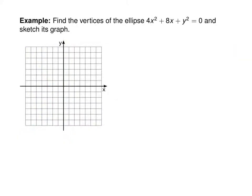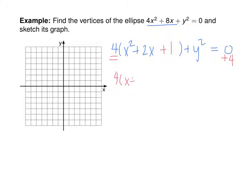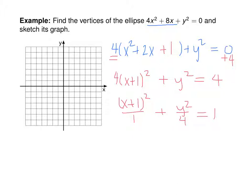Find the vertices of the ellipse and sketch its graph. We also have to complete the square here, but only with the x portion. Factor out the 4: 4(x² + 2x) + y² = 0. Half of 2 squared is 1; we add 1, but because of the 4 outside the parentheses we effectively added 4. So 4(x + 1)² + y² = 4, or (x + 1)²/1 + y²/4 = 1. This ellipse is centered at (−1, 0), with vertices 1 left and right and 2 up and down.